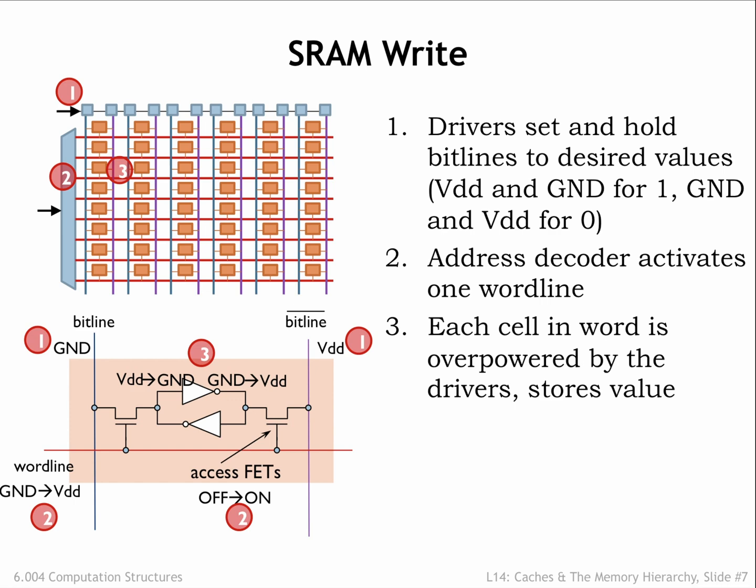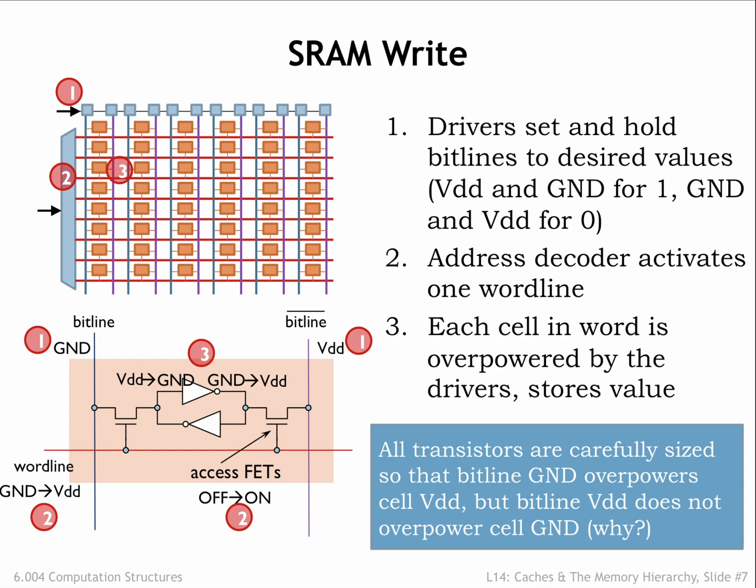We're basically shorting together the outputs of the driver and the internal inverter, so this is another analog operation — this would be a no-no in a strictly digital circuit. Since NFETs usually carry much higher source-drain currents than PFETs at the same width, and given the threshold drop of the NFET access transistor, almost all the work of the write is performed by the large NFET pull-down transistor connected to the bit line with the zero value, which easily overpowers the small PFET pull-up of the inverters in the cell. SRAM designers need a lot of expertise to correctly balance the sizes of MOSFETs to ensure fast and reliable write operations.